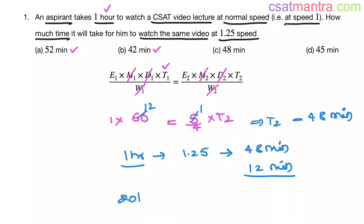So in 20 hours you will save 20 into 12 minutes, that is 240 minutes. This is equal to 4 hours. That means you can complete watching 20 hours of videos in 16 hours. You have saved 4 hours. So 20 minus 4 is 16 hours.